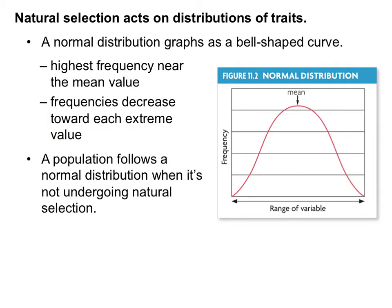Natural selection acts on a distribution of traits. A great way to think of this is height. If you took a population of humans and lined them up by height on a football field, you'd get a normal distribution, which graphs as a bell-shaped curve. Really short people would be at one end, really tall people at the other, but neither would be very many. The highest frequency is near the mean value, and frequencies decrease towards each extreme value. We refer to these end values as the extreme.